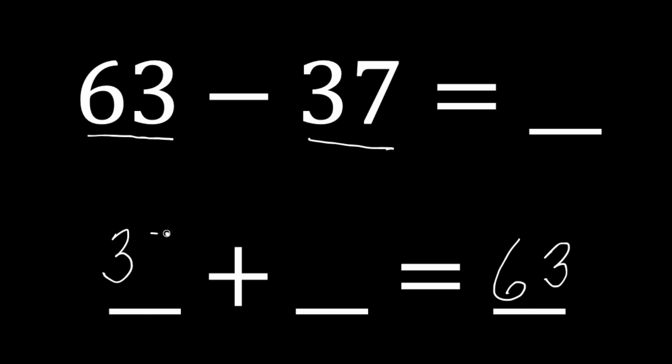Our difference becomes a missing addend. To solve, we're going to start here at 37 on the left and count up to the right to 63. First thing we do: go to the nearest 10. Our nearest 10 to 37 is going to be 40, so we'll go 1, 2, 3 - 38, 39, 40.